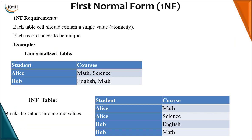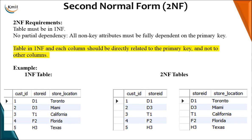In the first normal form, each cell in the table should contain a single value — that is atomicity. For example, Alice has enrolled in two courses: maths and science. As per the atomicity rule, one cell cannot have multiple values, so we split that into two different rows: Alice-Maths and Alice-Science, Bob-English and Bob-Maths. However, this has increased redundancy. 1NF may increase duplication — all the student details repeat for every course a student has taken up.